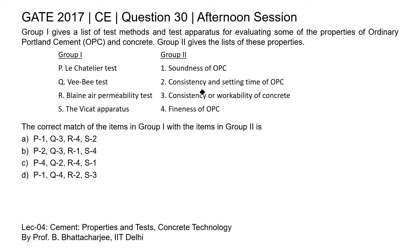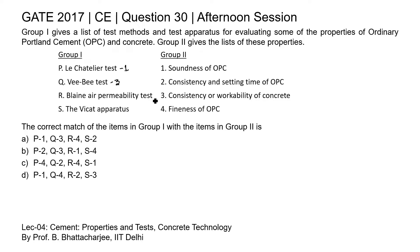In this question two lists are given. For P, the Le Chatelier test is used to determine the soundness of cement (ordinary Portland cement). For Q, the VB test is used to find the workability of concrete, so the correct option is 3. For R, the Blaine air permeability test is used to find the fineness of OPC in terms of specific surface area, so the correct match is 4.